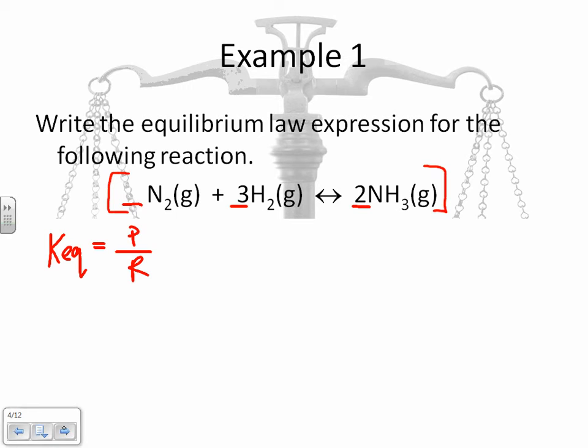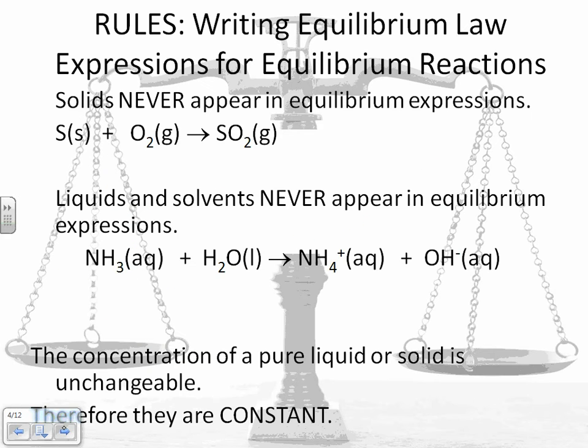All right, so if I'm looking at my products, the only product I have is ammonia, NH3. I'm going to put that to the exponent 2 because of my coefficient. I'm going to divide that by my reactants. In this case, I've got N2 to the exponent 1 because there is no coefficient in front of there. You don't necessarily have to write anything in there. I'm just doing that to clear things up for now. And my other reactant is H2, and that's going to be to the exponent 3. So there is my equilibrium law expression for this reaction.